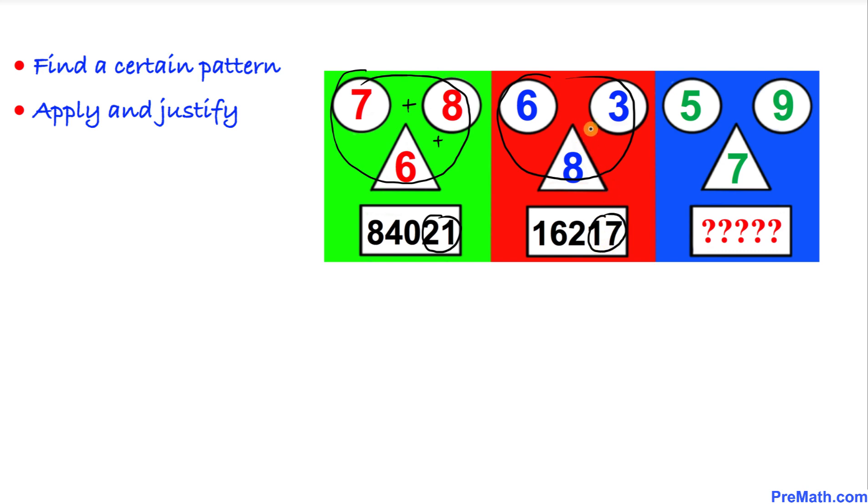Likewise, we are going to apply the same analogy. When we add these numbers, 5 plus 9 plus 7, the last two digits are going to be 21.